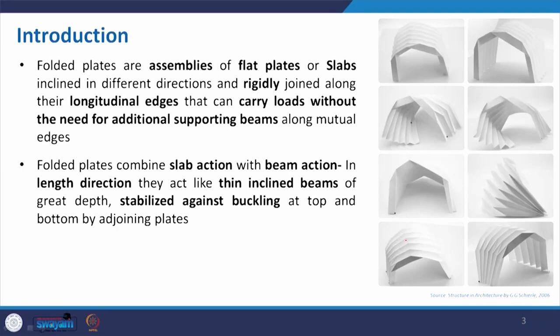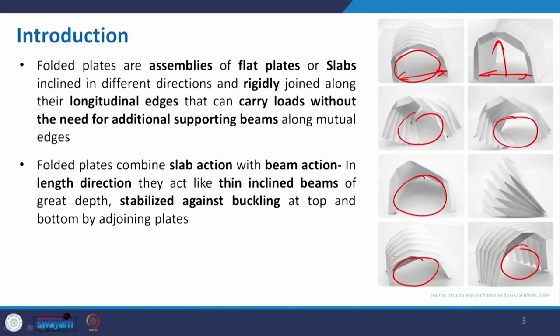Folded plates are assemblies of flat plates or slabs — the plate or slab is alternately inclined in different directions, and the members may not be equal, rigidly joined along their longitudinal edges. When you have this paper, you just divide it and make a fold. The same paper is folded and then carries the loads without the need for additional supporting beams. In most cases, folded plates combine slab action and beam action together.